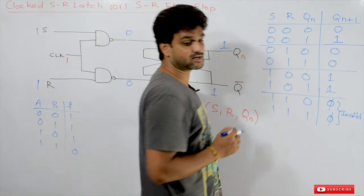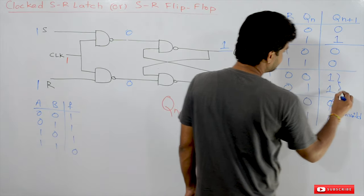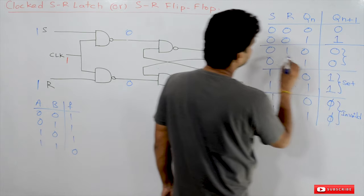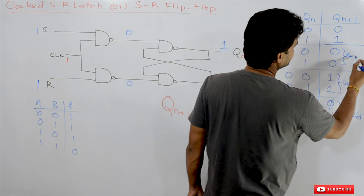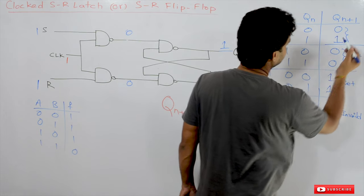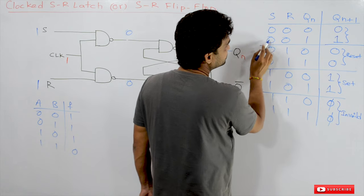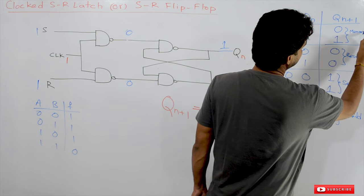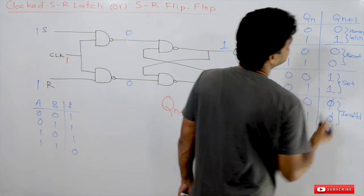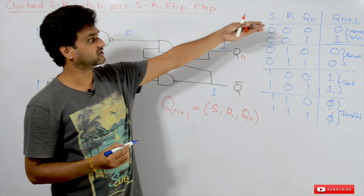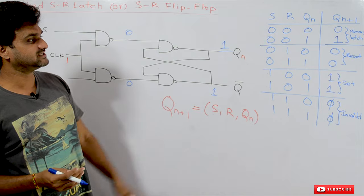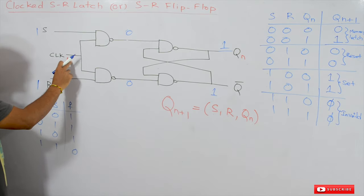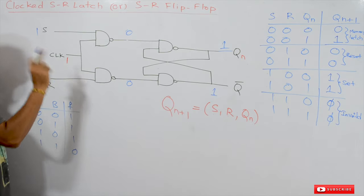To summarize the characteristic table: whenever SR=0,0 the values remain the same — this is what we call the memory or latch state. Whenever R=1, we reset the output. Whenever S=1, we set the output. This is what we call the SR gate with clocked input, which is the SR flip-flop.